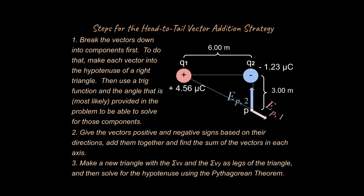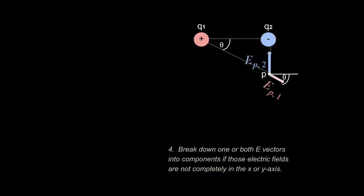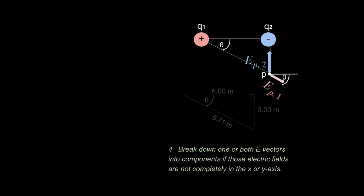You should know how to do the head-to-tail vector addition strategy — I've done a screencast on that and will link it. Step four is to break down one or both electric field vectors into components if those fields are not completely in the x or y axis. EP2 is completely in the y-axis, so no breakdown needed. EP1 is not, so we need to break it into its components — we cannot add vectors in different directions without doing so.